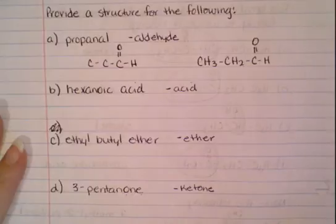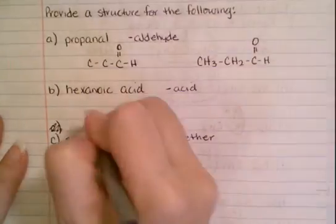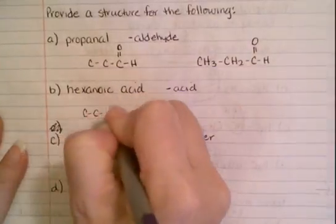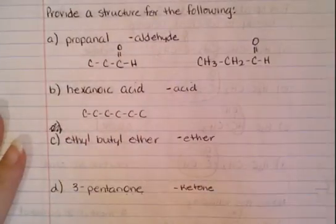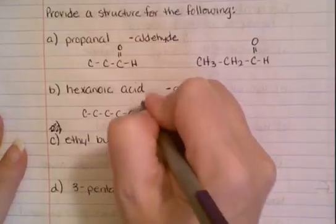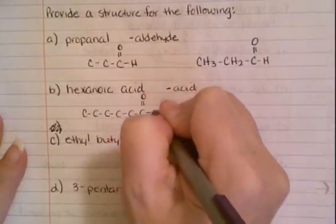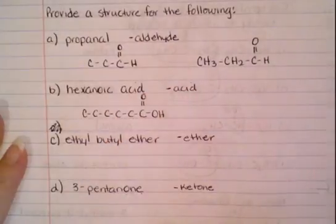Now on hexanoic acid, we know that it has six carbons. And we know that it has to have a double bond O bonded to an OH to make it an acid.